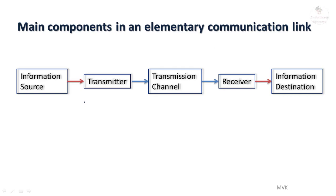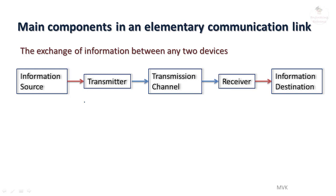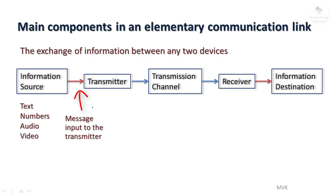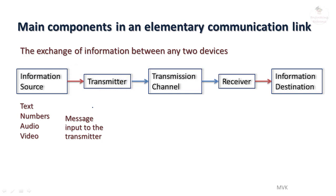In general, communication means the exchange of information between any two devices. The general blocks involved in a communication link to exchange information from one place to another are: the source, where information originates — which can be text, numbers, audio, or video — and the transmitter, which processes the message input signal into a time-varying form that matches the transfer properties of the channel. This process is called encoding.